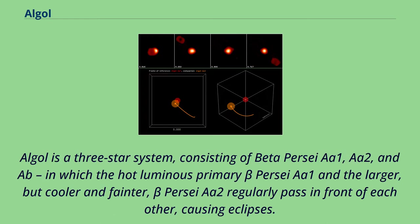Algol is a three-star system consisting of Beta Persei A1, A2, and Ab, in which the hot luminous primary Beta Persei A1 and the larger but cooler and fainter Beta Persei A2 regularly pass in front of each other, causing eclipses.